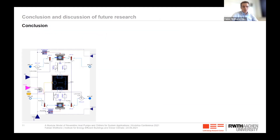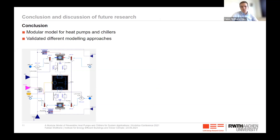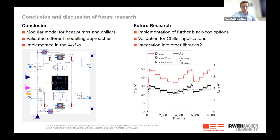To conclude, we implemented a modular model for heat pumps and chillers, validated it with different modeling approaches, and implemented it in the AixLib library developed at our institute. For further research, we want to implement additional black box options and validate chiller applications — our institute is focused mainly on heat pumps but we also want to validate the chiller options. Lastly, we want to check if integration into other libraries, for example the IBPSA core library, is applicable. Thanks for your attention — happy to discuss any questions.